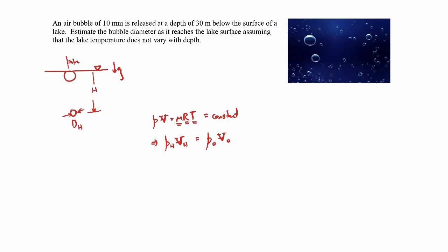Okay, now we can determine the pressure at the various depths using the hydrostatic pressure relation. So the pressure at depth h will be atmospheric pressure, the pressure we start with up here on the free surface, plus the density of the lake water times gravity times h. And the pressure at the free surface will just be atmospheric pressure.